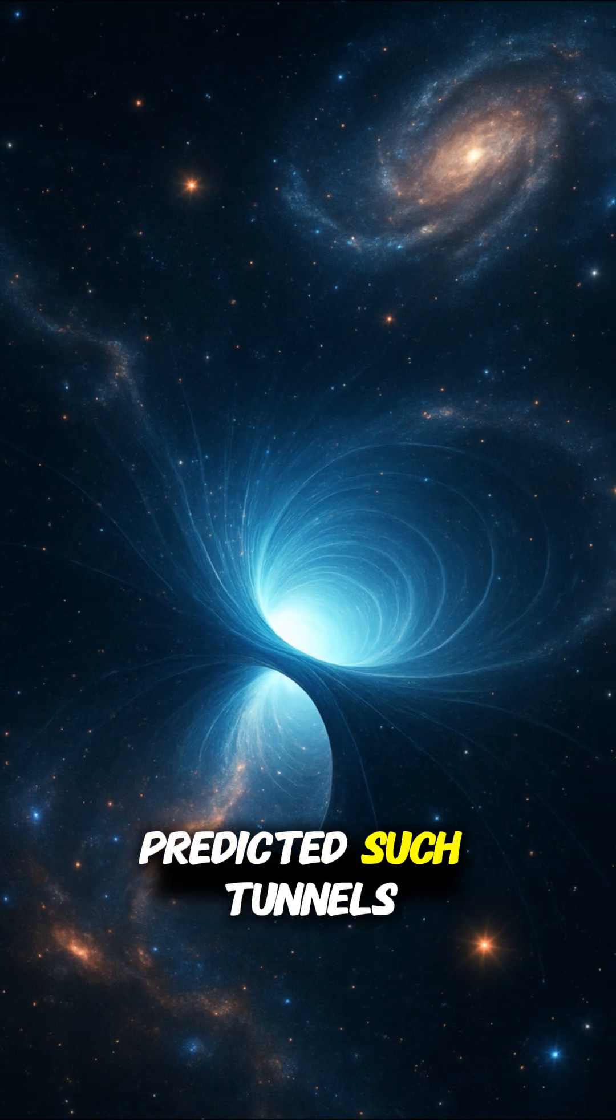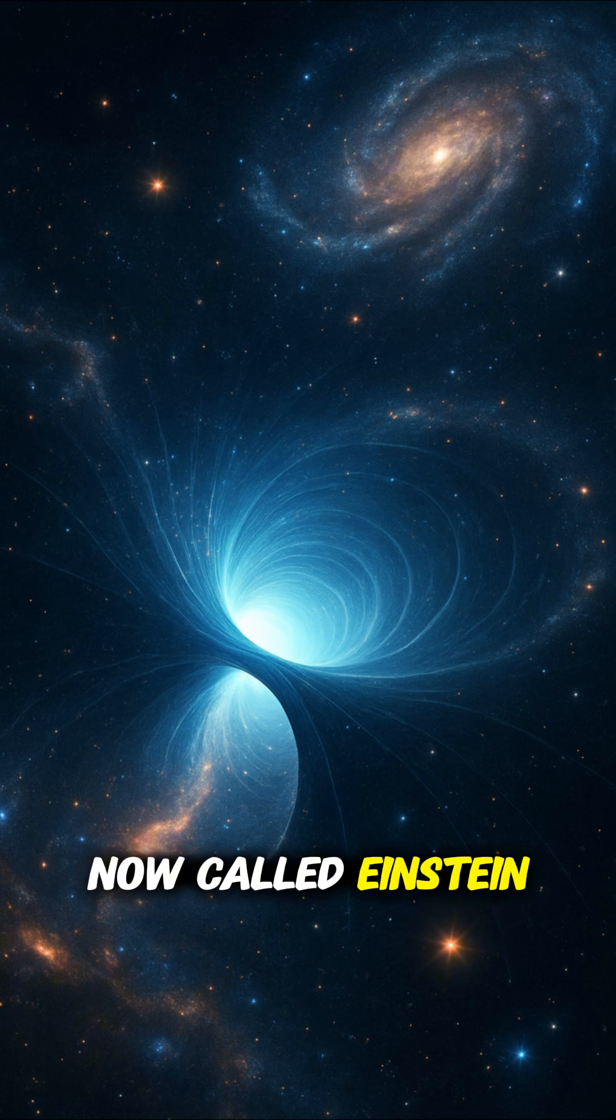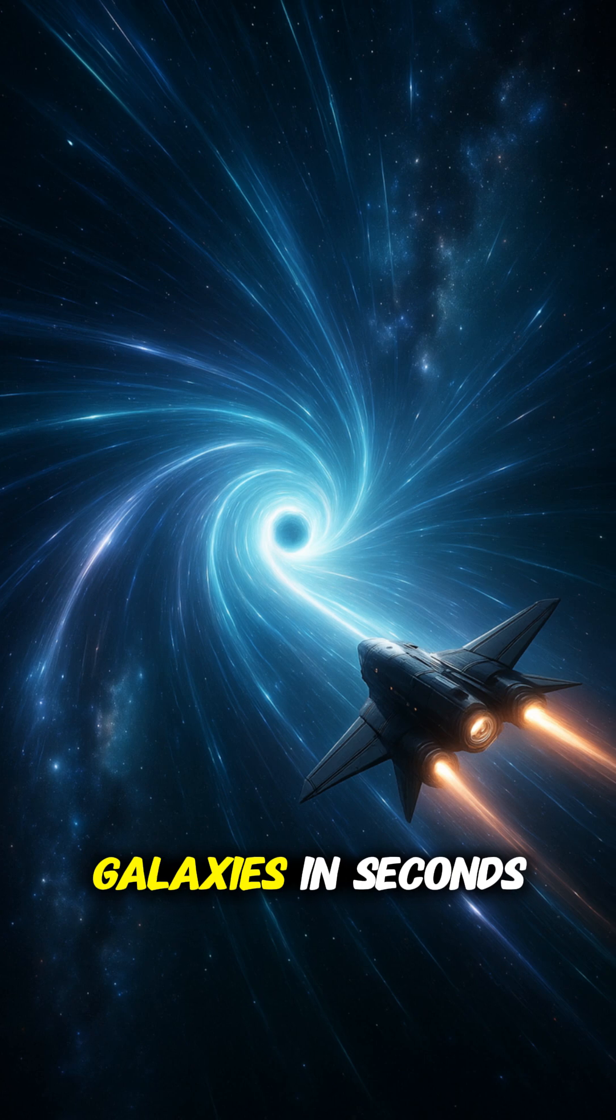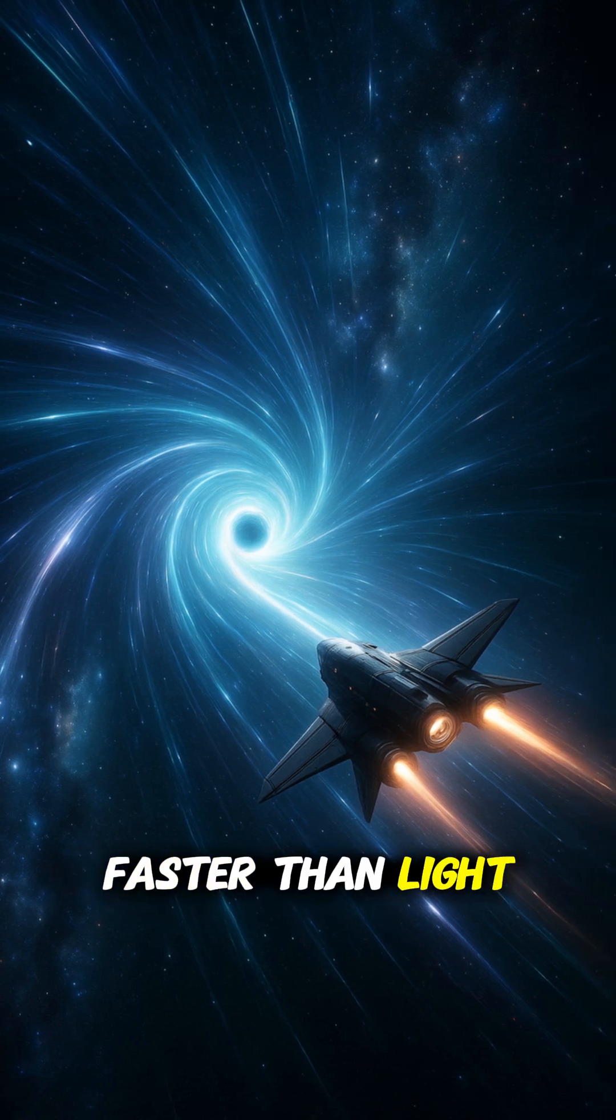Einstein and Rosen predicted such tunnels, now called Einstein-Rosen bridges. Through a wormhole, you might cross galaxies in seconds, faster than light itself.